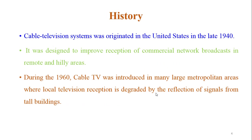History. The cable television system originated in the US in the late 1940s and was designed to improve the reception of commercial network broadcasts in remote and hilly areas. During the 1960s, cable TV was introduced in many large metropolitan areas where local television reception was degraded by reflection of signals from tall buildings.